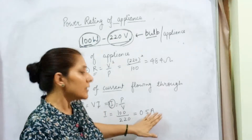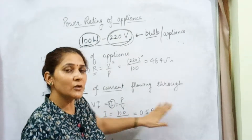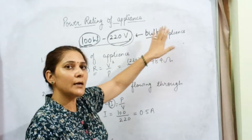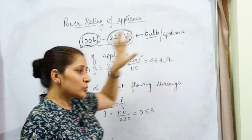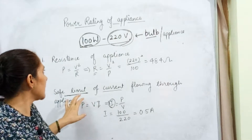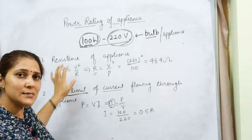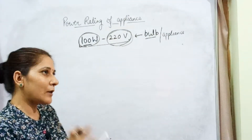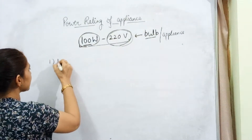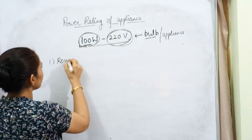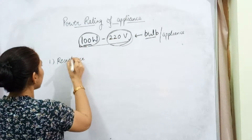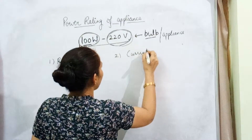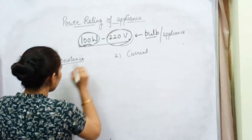If the current exceeds 0.5 ampere, that amount of current is not safe for the appliance — it may damage it. So this way we can find out two things: resistance, and the safe limit of current. We calculated resistance of the appliance with the help of the power rating, and the current flowing through the appliance with the help of the power rating.